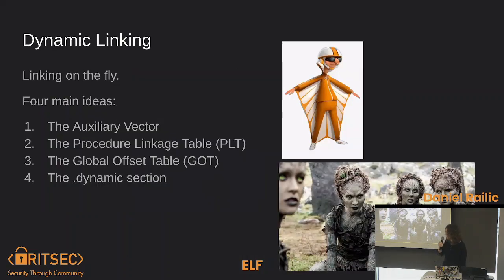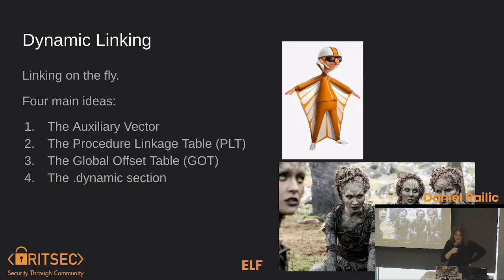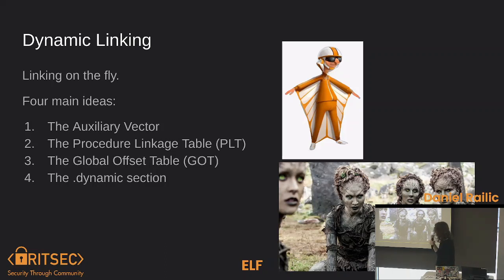Okay, that's relocations — that's how you do them by hand. It's a painful process, don't ever do it unless you're trying to do something cool. Dynamic linking — linking on the fly. There are four main ideas here: the auxiliary vector, the procedure linkage table, the global offset table (GOT — I put Game of Thrones images because those things look like elves), and the dynamic section.